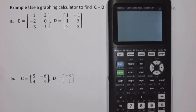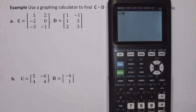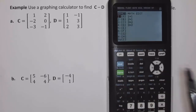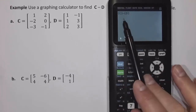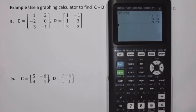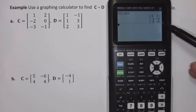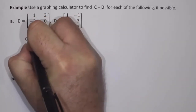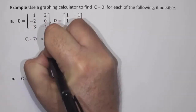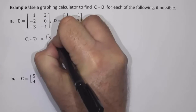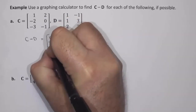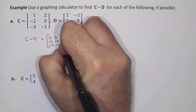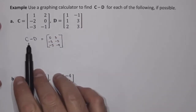I'll press second quit to go back to the home screen. Now I'm going to go to matrix, choose matrix C minus matrix D, and that gives this result: the 3 by 2 matrix 0, 3, negative 3, negative 3, negative 5, negative 4. So for Part A, matrix C minus matrix D equals the 3 by 2 matrix: 0, 3, negative 3, negative 3, negative 5, negative 4. This is the result of C minus D.